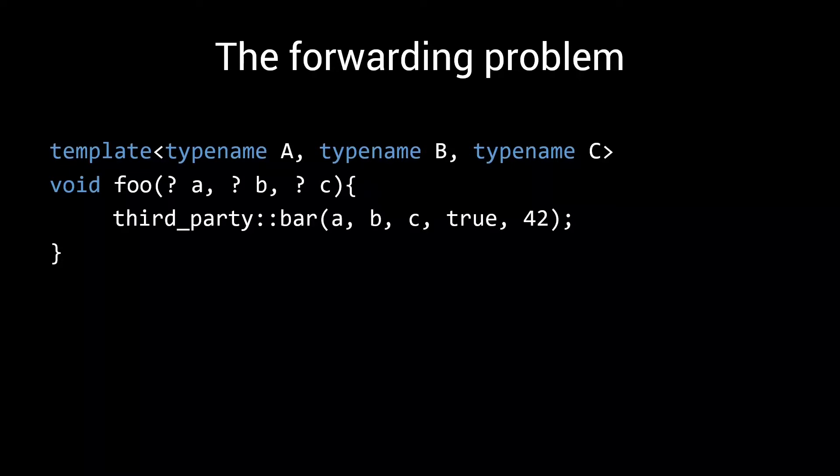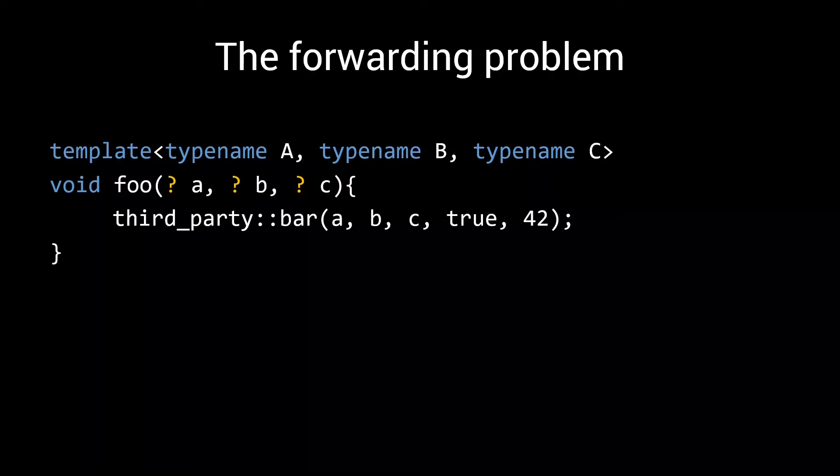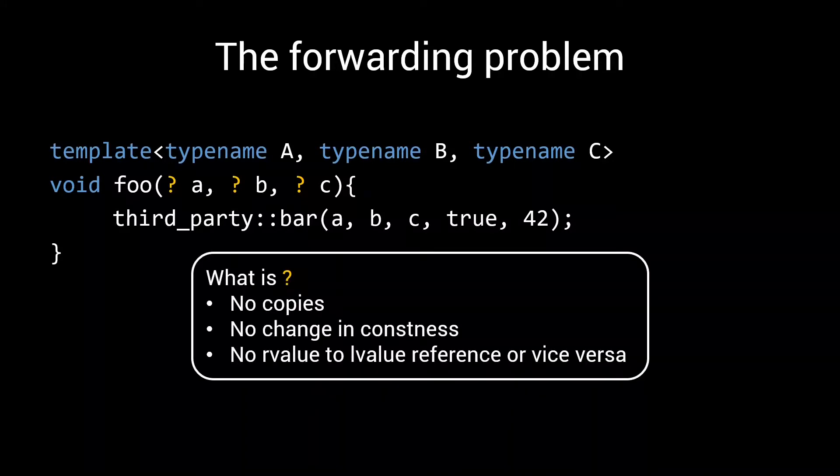Now you want to make sure that if you call foo with three inputs, this is exactly the same as when you call this third-party function bar with those same three inputs and then this fourth and fifth argument. That begs the question, how should you take your a, b, and c input parameters such that you don't accidentally make any copies, you don't change their constness, and you don't turn an r-value into an l-value reference or do the other round.